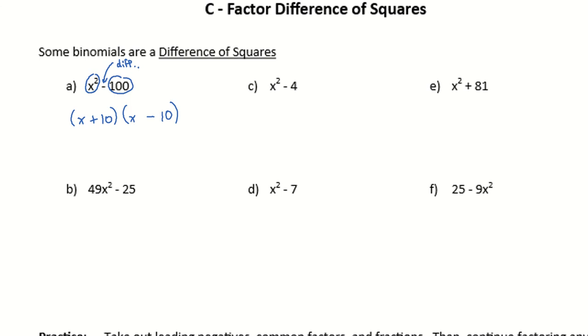So difference of squares is usually very easy to deal with. For b down here, this is a difference of squares, because 49x squared is a perfect square of 7x, and 25 is 5 times 5, or 5 squared. One's plus, one's minus.